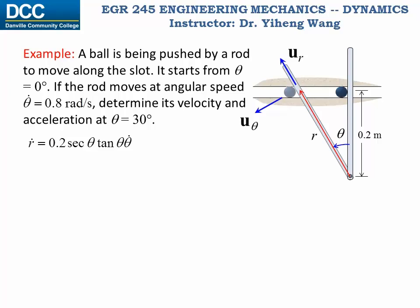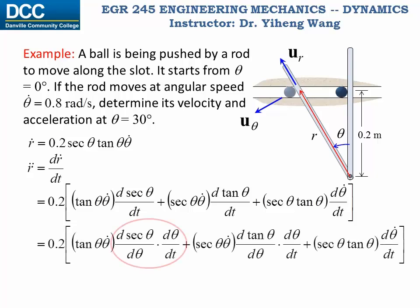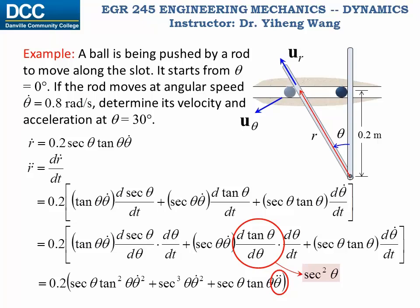We need to continue to differentiate r-dot with respect to time to get r-double-dot. Since r-dot is the product of secant theta, tangent theta, and theta-dot, all of which are functions of time, we need to use the product rule. Applying the chain rule twice, and noting that d(tan θ)/dθ equals secant squared theta, we obtain the expression for r-double-dot. Note that theta-double-dot here is the angular acceleration.